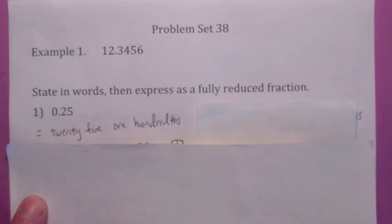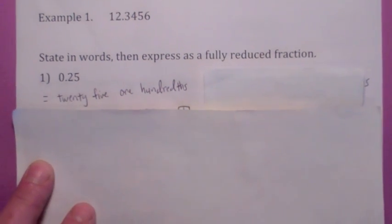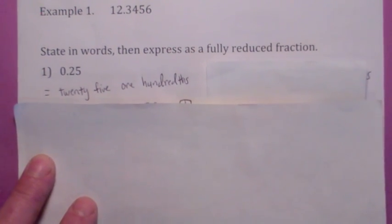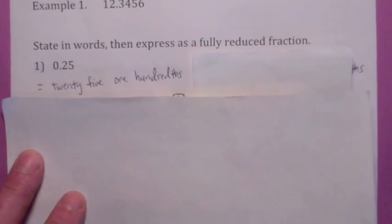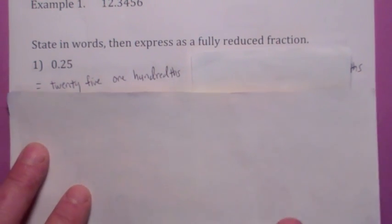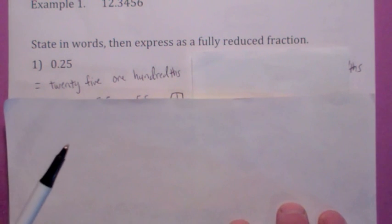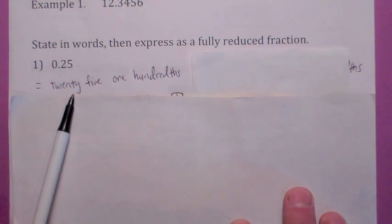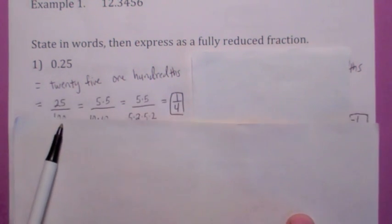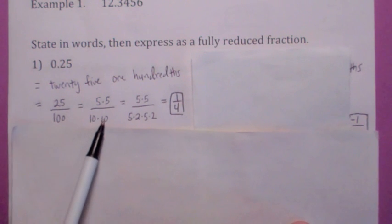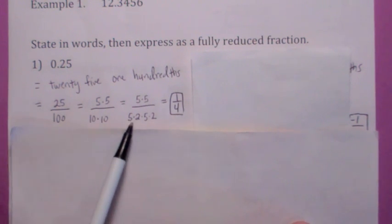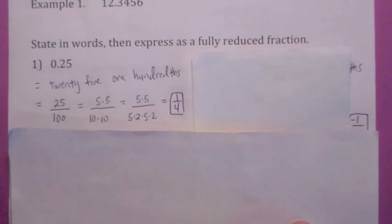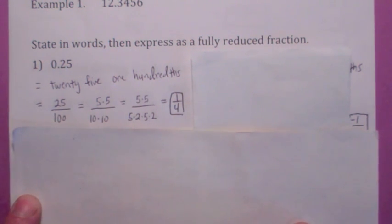If you want to convert between decimals and fractions, it's kind of nice to just say it in words first. This would be 25 one-hundredths, so as a fraction it would just be 25 over 100, and you can then factor it and cancel the common factors of 5. The final answer is one-fourth.